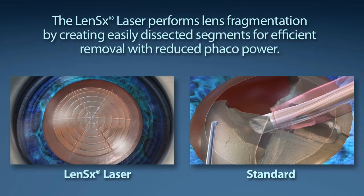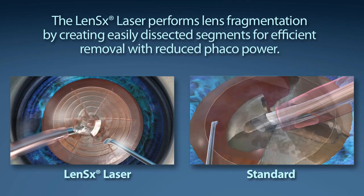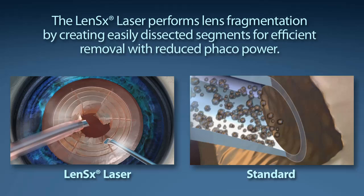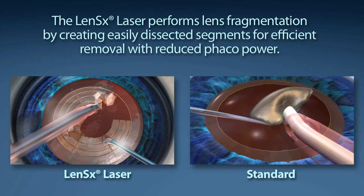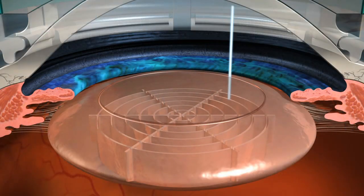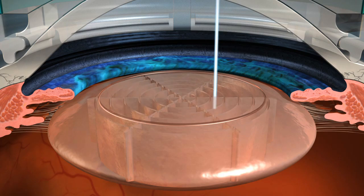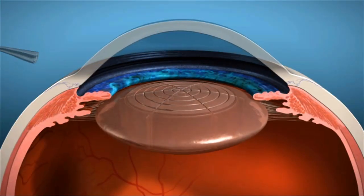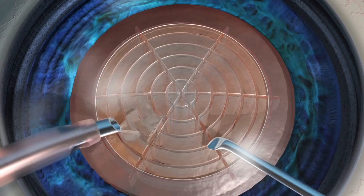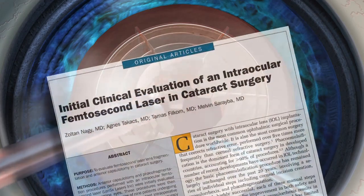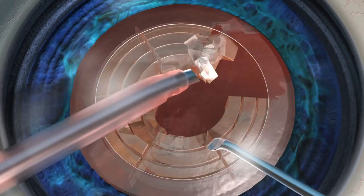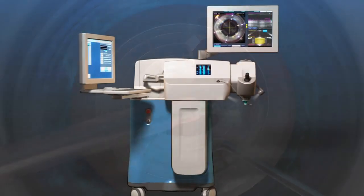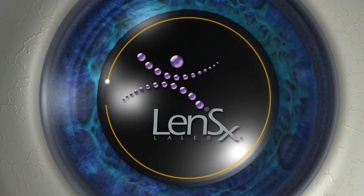Standard cataract surgery requires a phacoemulsification machine to segment and remove the content of the cataract. The goal of your surgeon is to reduce the amount of phaco energy used to remove your cataract. The LensX laser performs lens fragmentation, creating easily dissected segments for efficient removal with little or no phaco power. With the laser pulses utilized, the LensX laser provides the surgeon a 43 percent reduction in phaco power and 51 percent reduction in phaco time compared to the standard cataract procedure. LensX laser refractive cataract surgery offers a new level of precision and reproducibility in ophthalmic surgery.